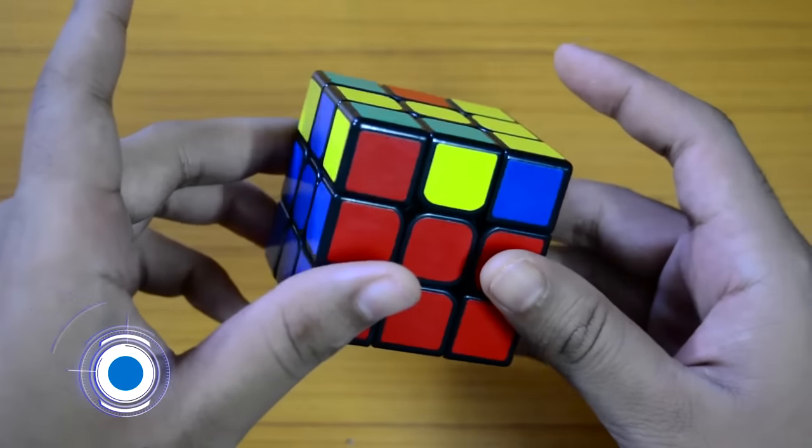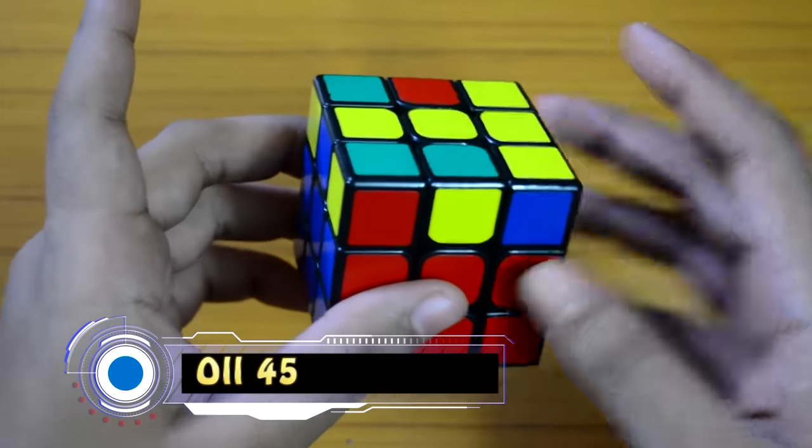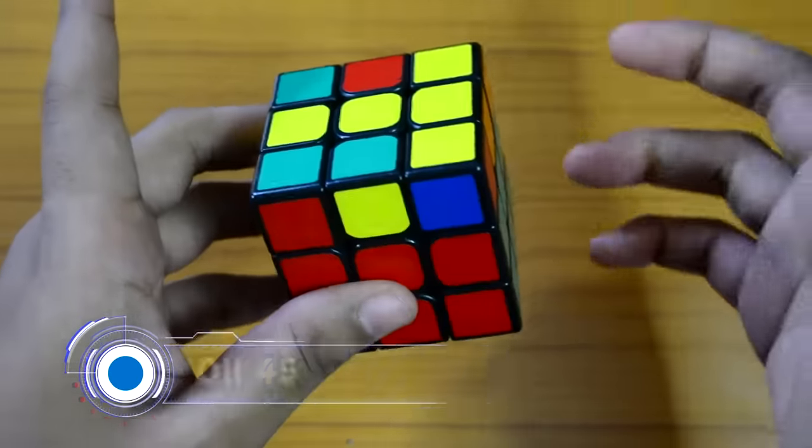Hey guys, it's me CriticalCubing and today we are going to learn an easy OLL case. This OLL is OLL number 45 and it is part of the T OLL case.